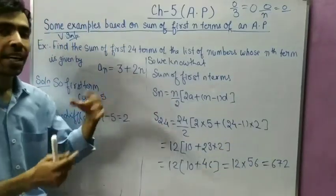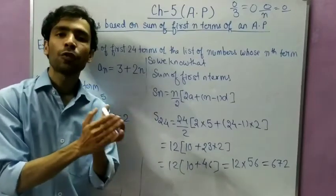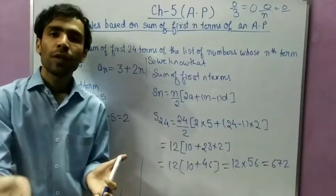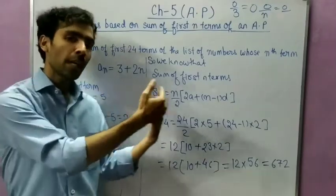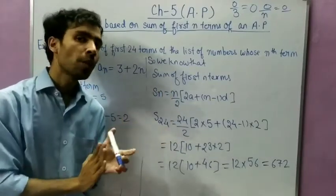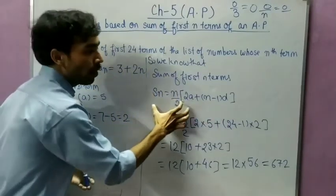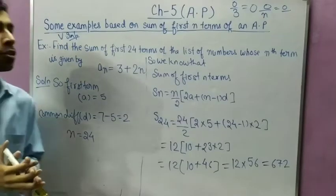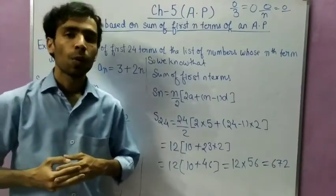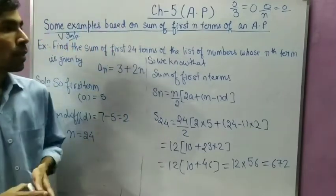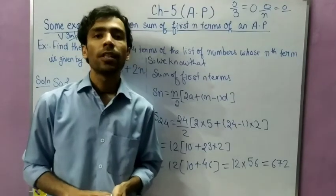When this type of question comes and an is given instead of the AP, first form the AP by putting n = 1, 2, 3 and so on into the nth term. From there you can find the first term and common difference, and then calculate whatever sum is required. I hope you have understood all 3 questions discussed today. Some more questions are left which we will discuss in the next part. Practice all the questions. Have a nice day, thank you.